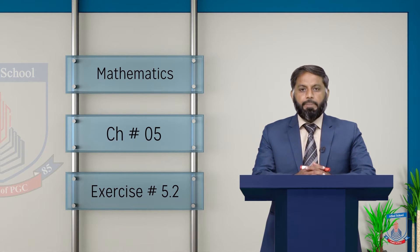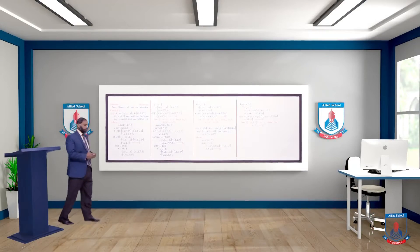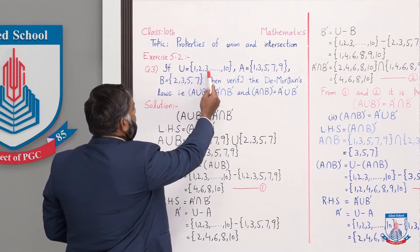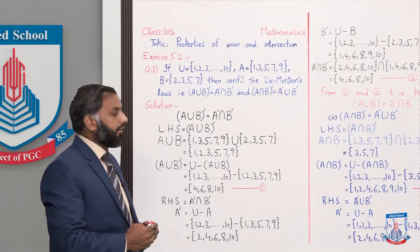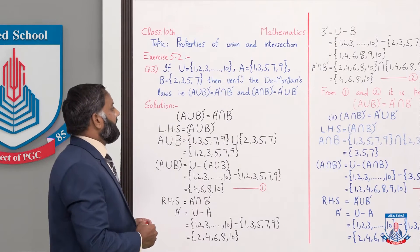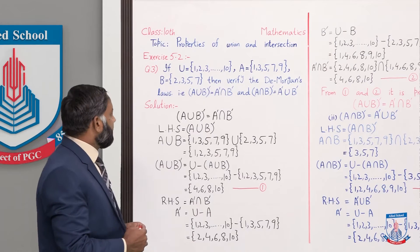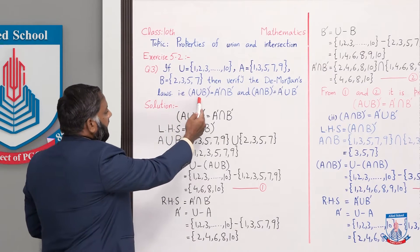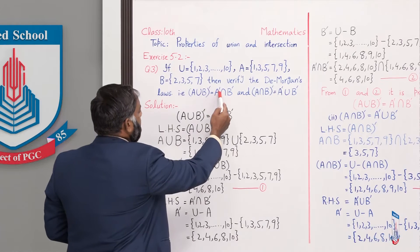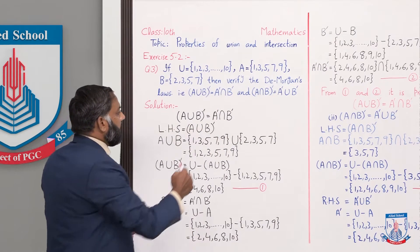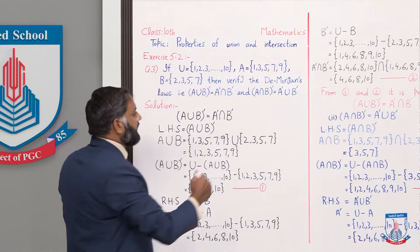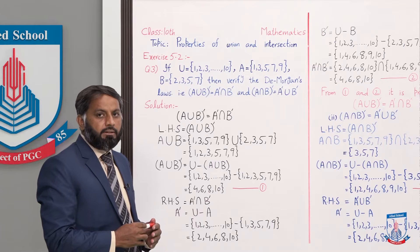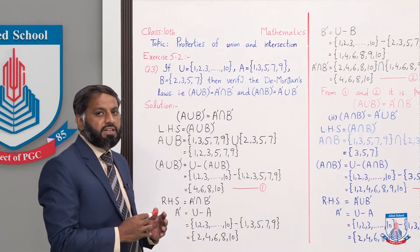Today we will start from question number 3. Let's move towards the board. Exercise 5.2, question number 3: if universal set U = {1, 2, 3, ..., 10}, set A = {1, 3, 5, 7, 9}, and set B = {2, 3, 5, 7}, then verify De Morgan's Laws. De Morgan's Laws are: (A∪B)' = A'∩B', and the other law is (A∩B)' = A'∪B'. We also studied these in the last lecture on properties of union and intersection.